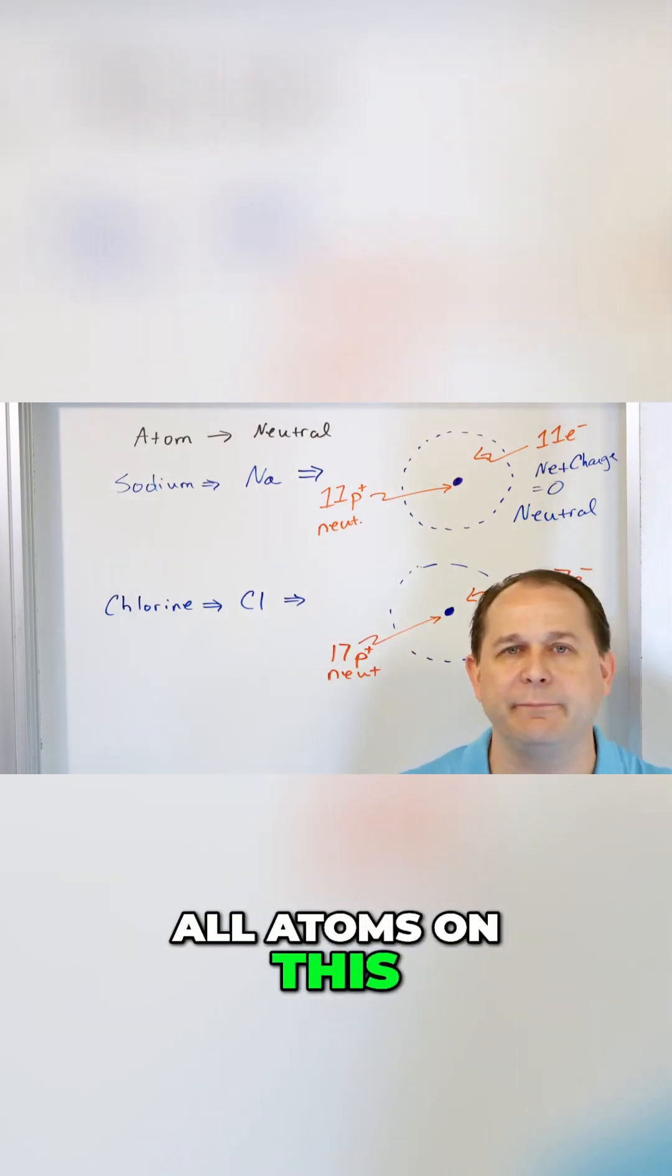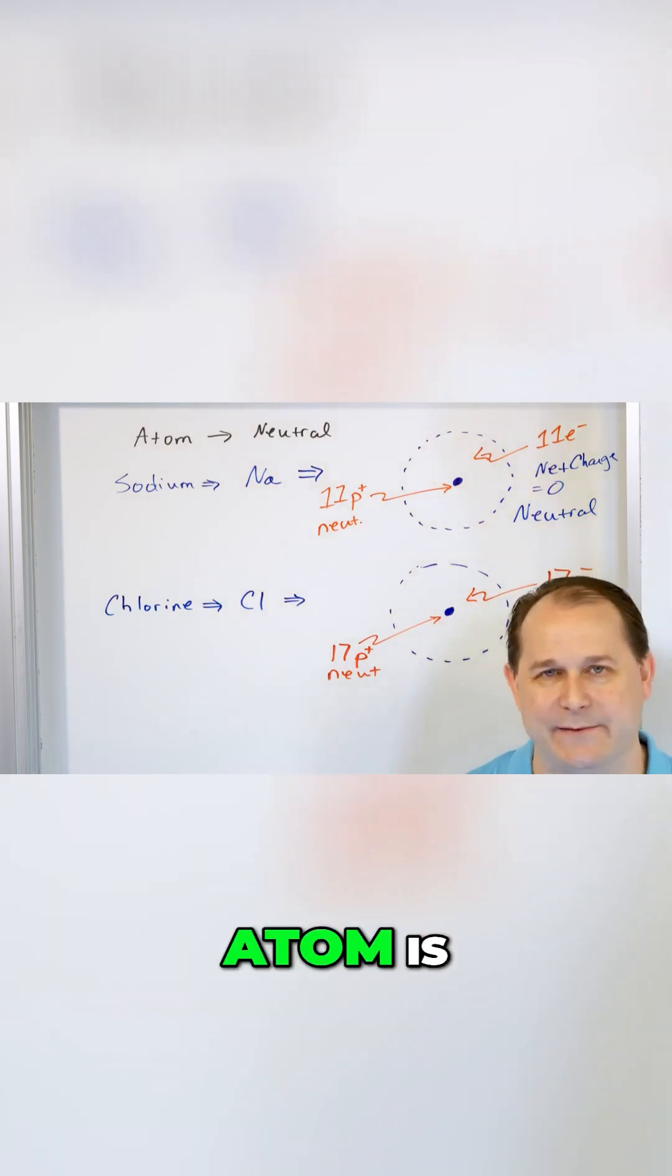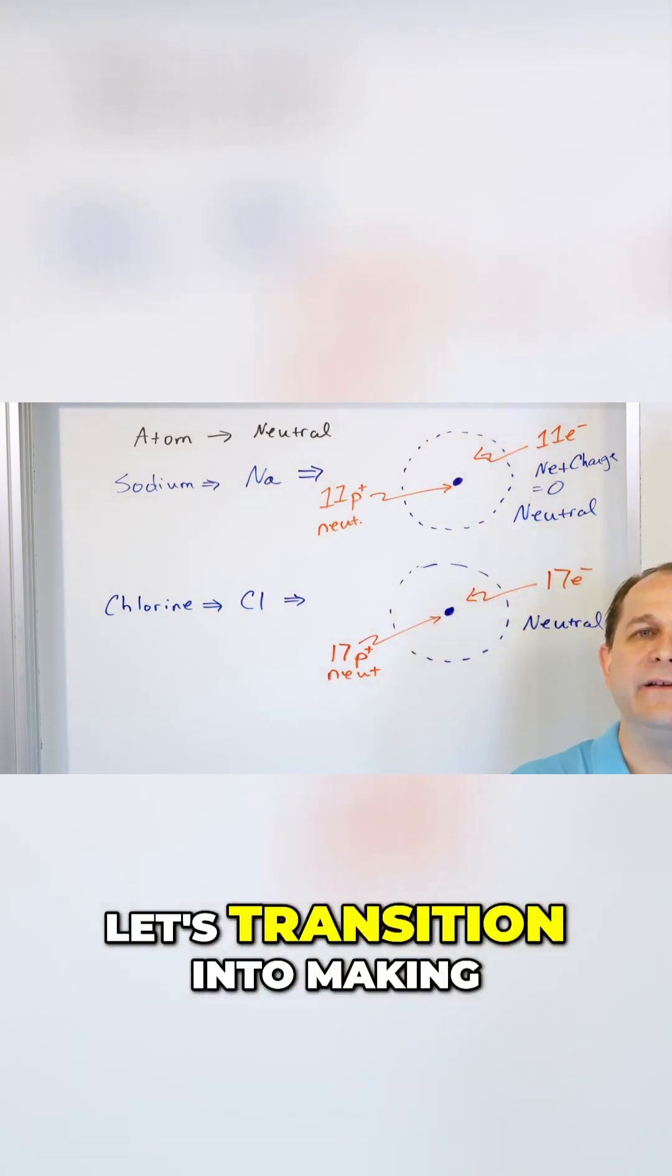All atoms on this periodic table have equal and opposite number of protons and electrons. Now that's what an atom is. Let's transition into making an ion.